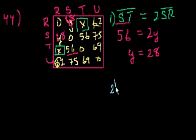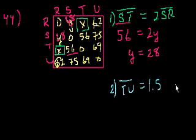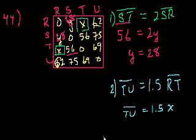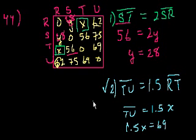Statement number 2, by the most direct route, the distance between t and u is 1.5 times the distance between r and t. This is interesting because r and t is x. So they're saying the distance between t and u is equal to 1.5 times x. And what's the distance between t and u? The distance between t and u is 69. So you have 1.5x is equal to 69. You don't even have to solve it. Statement number 2 alone helps you figure out what x is. Statement number 1 is fairly useless. So the answer is B.